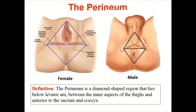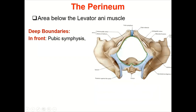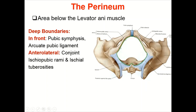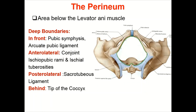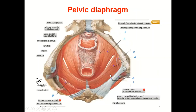The perineum is a diamond-shaped space between the inner aspects of the thighs. Anteriorly it is bounded by the pubic symphysis, and behind it is bounded by the sacrum and the coccyx. The deep boundaries — which are the boundary of the outlet of the bony pelvis — include the pubic symphysis and arcuate pubic ligament in front, conjoint ischiopubic rami and ischial tuberosities on each side anterolaterally, and the sacrotuberous ligament posterolaterally.